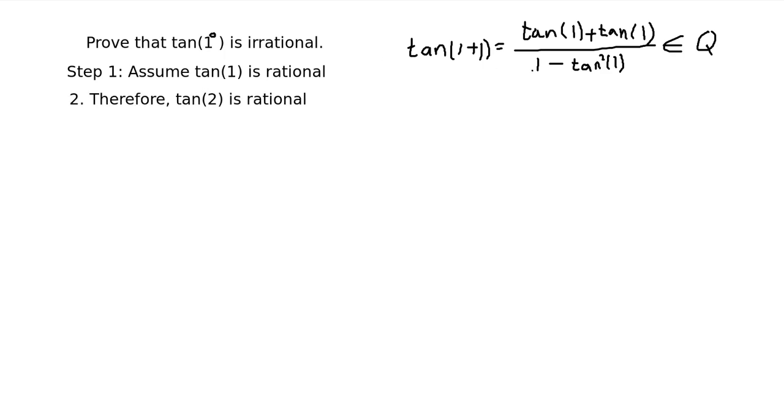And maybe this is going somewhere, right? Because, let's think about some tangents that we know for sure are irrational. The first one that comes to the top of my head, or at least the smallest one, is tangent of 30.